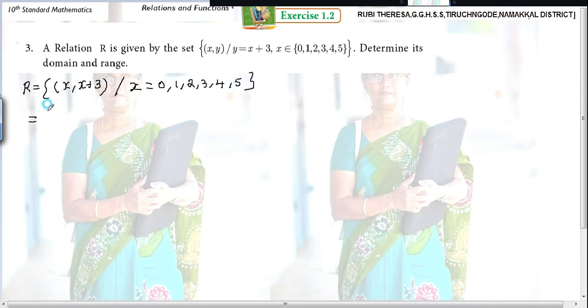Now it's easy for you to write the ordered pairs. Those who are not able to write it directly can do it like this: The first element is 0, so 0 comma 0 plus 3.